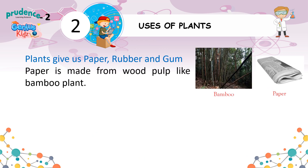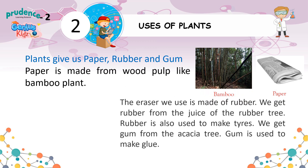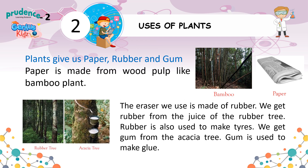Plants also give us paper, rubber, and gum. Paper is made from the pulp of bamboo plant. We get rubber from the juice of the rubber tree. Rubber is also used to make tyres.